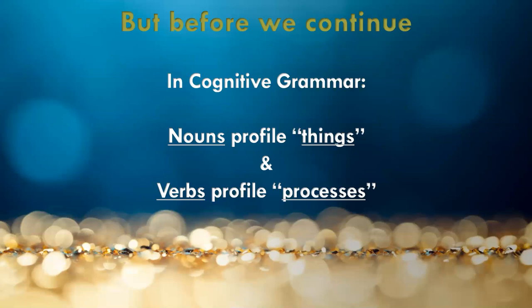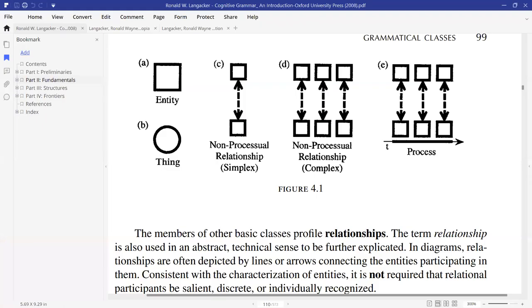In cognitive grammar, nouns profile things and verbs profile processes — that's a very important distinction. Nouns, the grammatical category we use every day, are terminologically defined as 'things' in cognitive grammar, and verbs are 'processes.' This issue is actually quite complex; Langacker discusses it on page 99 of the book.